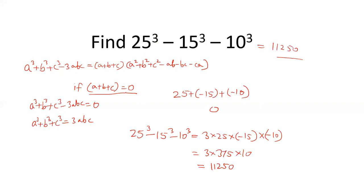So friends, here we have learned the formula a cube plus b cube plus c cube minus 3abc equals (a + b + c)(a square plus b square plus c square minus ab minus bc minus ca). And if a plus b plus c is 0, then a cube plus b cube plus c cube equals 3abc. I hope you liked the video. Please like the video and subscribe to our channel.